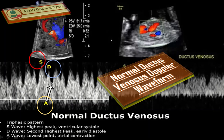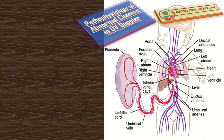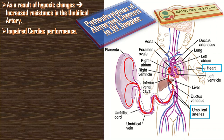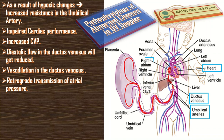In this triphasic forward flow, we have three waves: the S wave, the D wave, and the A wave. The entire blood flow is in the forward direction. Regarding the pathophysiology of abnormal changes in ductus venosus Doppler: these changes initially take place in the umbilical artery as a result of hypoxic changes, causing increased resistance in the umbilical artery. This increased resistance leads to impaired cardiac performance, which in turn results in increased CVP — the central venous pressure — and as a result the diastolic flow in the ductus venosus gets reduced.